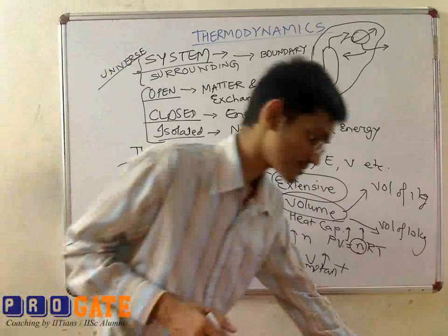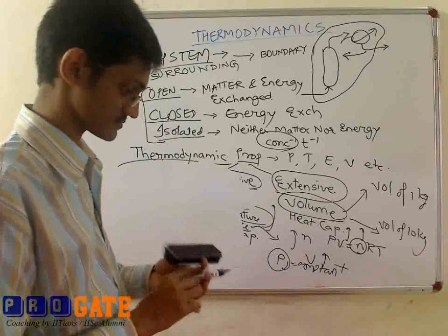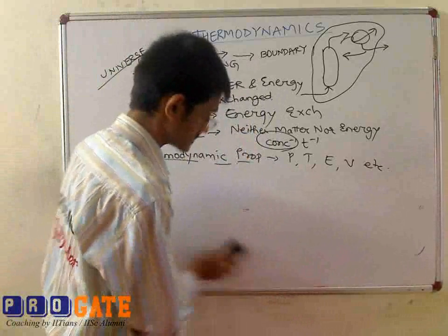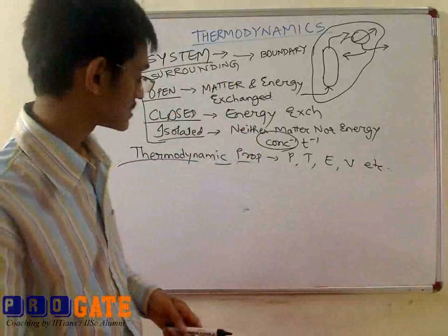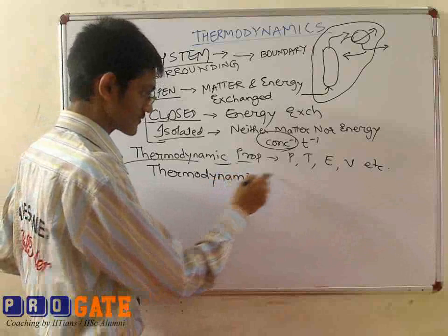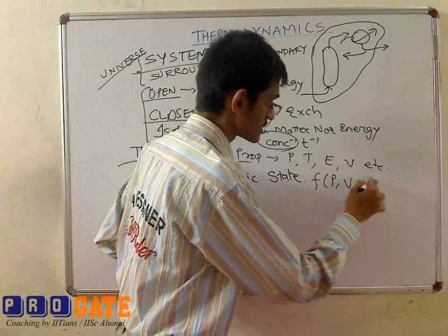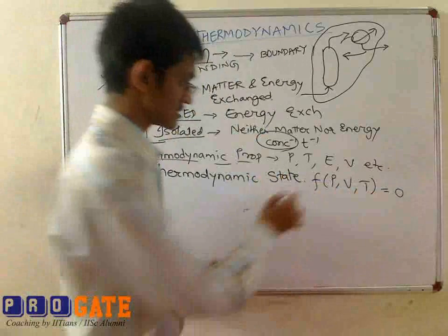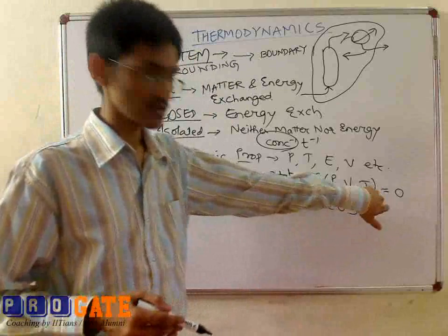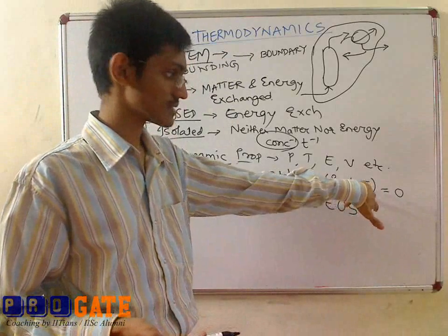Having understood thermodynamic properties, there are thermodynamic functions. The first thing to understand is the equation of state. In thermodynamics, it is given by the relationship between the properties in the system. Pressure, volume, and temperature together give you the thermodynamic state. This is a function of P, V, and T. Given any two of them, the value of the third gets fixed — so only two of them are independent. That is the equation of state.